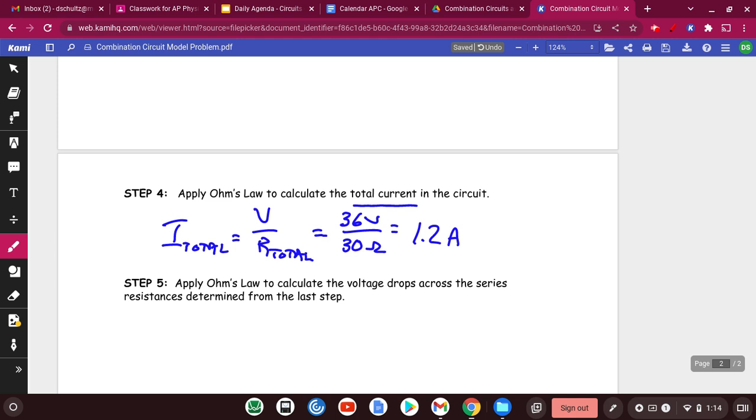And again, maybe what I'll do is draw this little picture. We've got the 30 ohms, and now you've got 1.2 amps going through it.